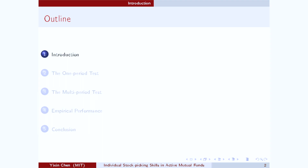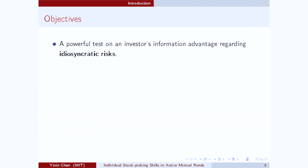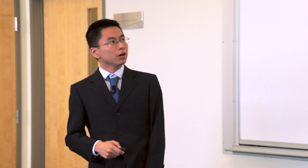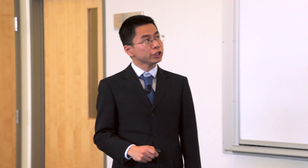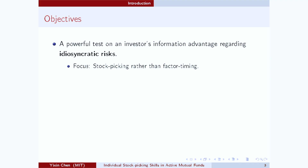Today I'm going to show you a test which is going to tell us whether or not an investor has superior information about the idiosyncratic risks of the securities that he or she keeps in the portfolio. The keywords here are idiosyncratic risks. My test is going to detect the investor's stock picking abilities, but it is silent on the investor's potential ability to forecast aggregate risk factors.